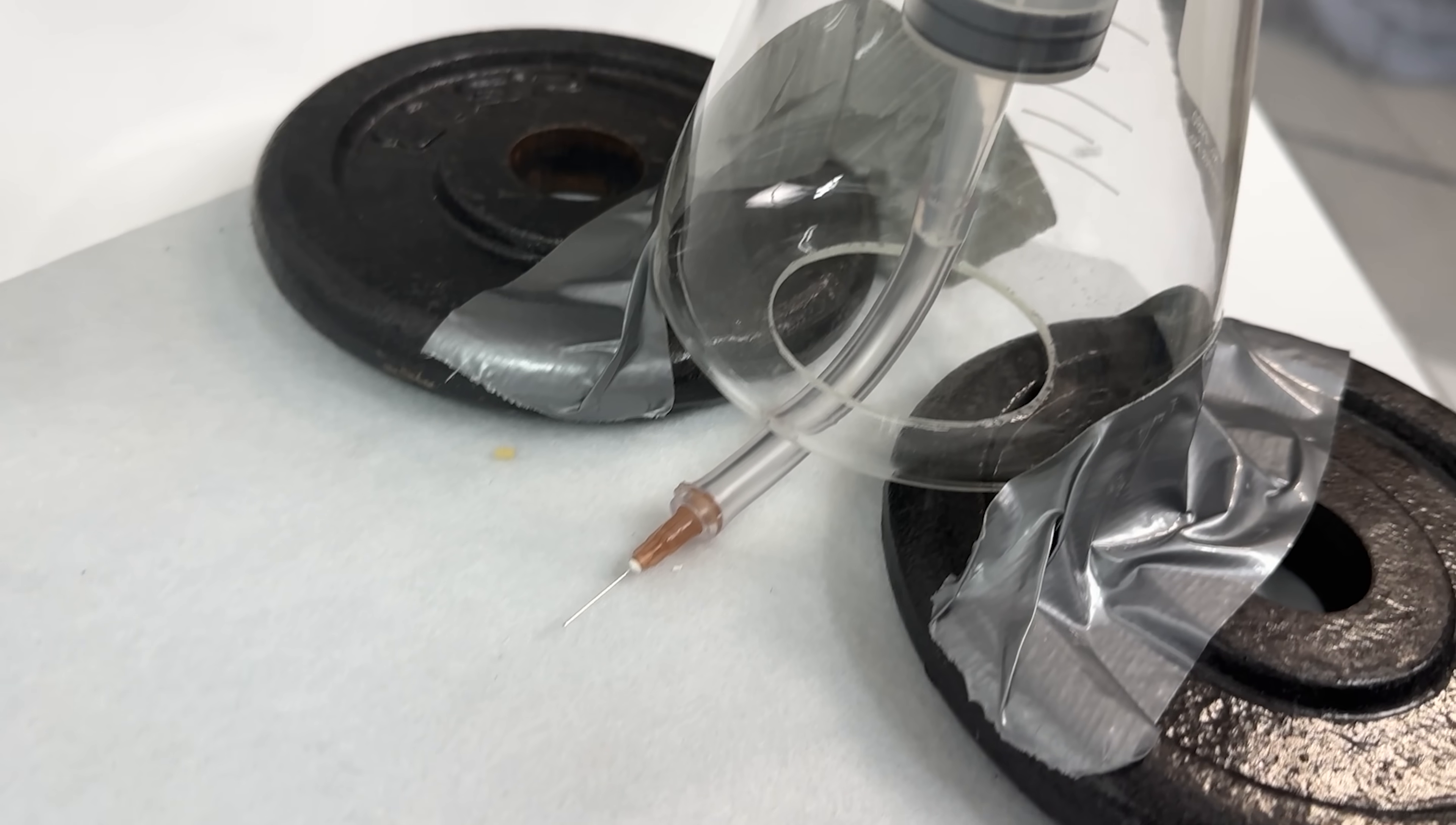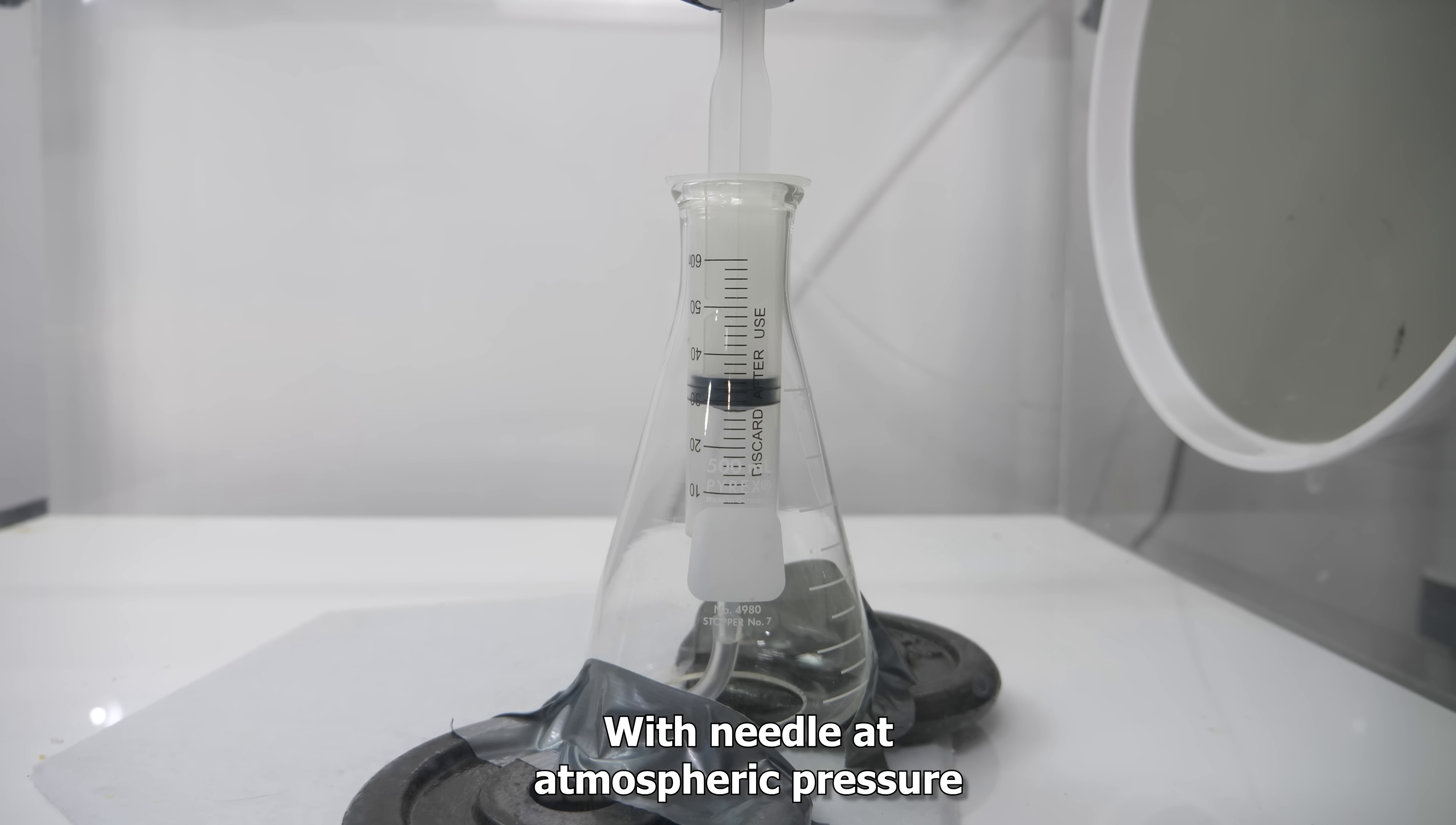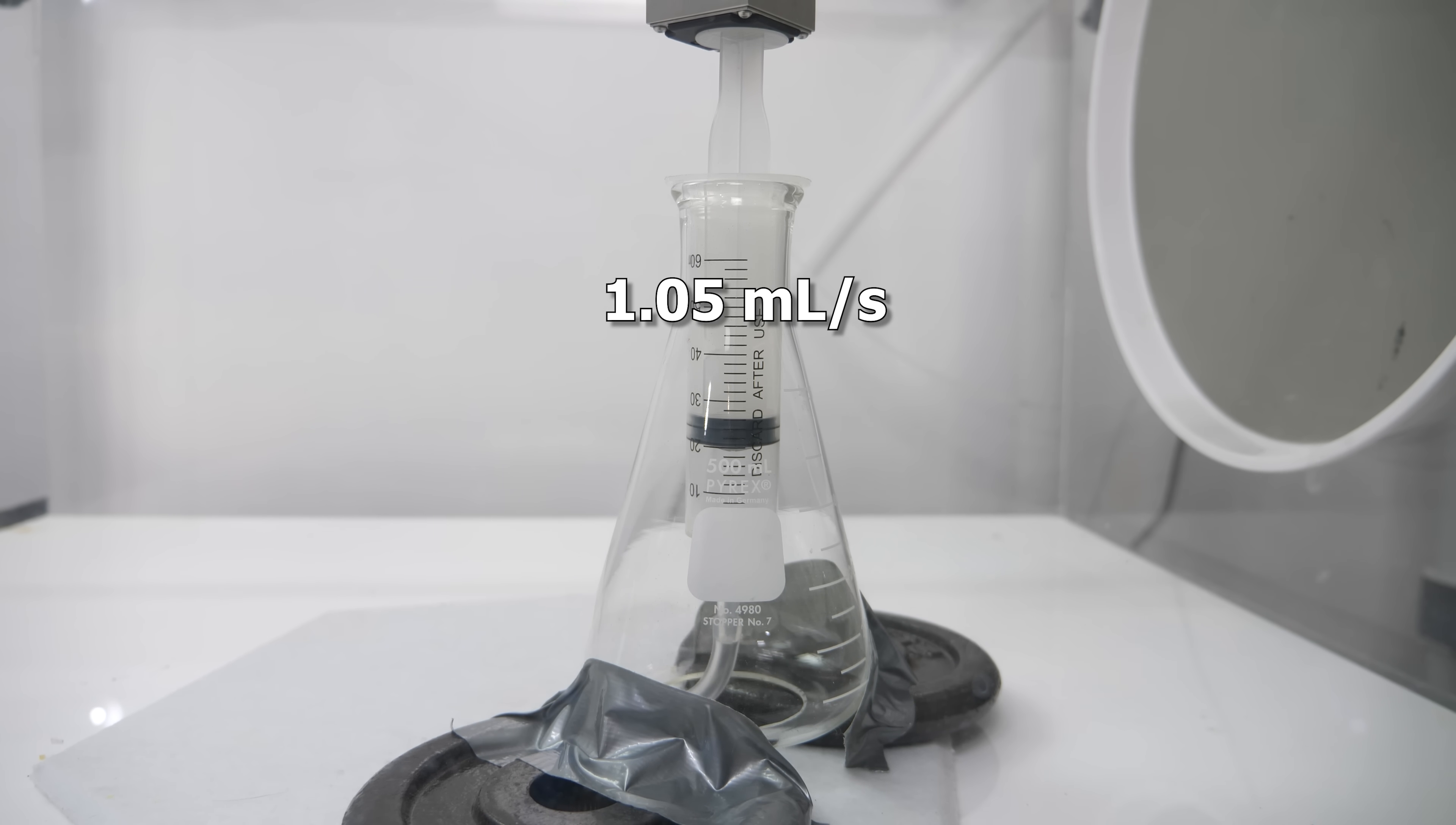Then when we put the needle on, you can see that it falls at this rate. If we wait for it to get to the bottom where it's most stable, based on the markings on the syringe, we can see it falls at around 1.05 milliliters per second.